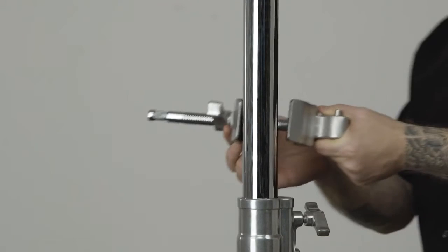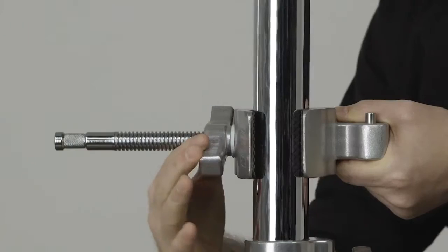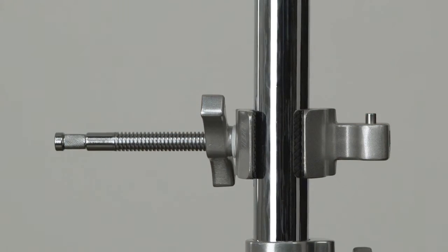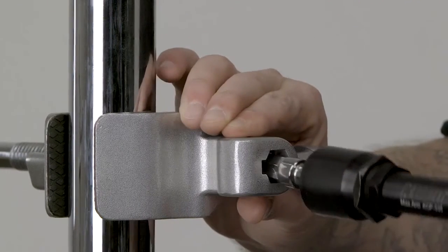First we'll mount this Kupo supervisor clamp on the stand by placing the jaws around the riser section and then turning the large wing nut clockwise until secure. Press and hold the silver button while inserting one of the Max Arms 5/8 inch baby studs into the hex receiver and tighten the knob until secure.